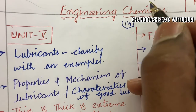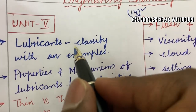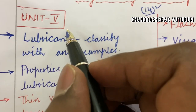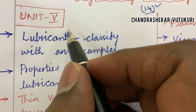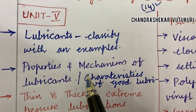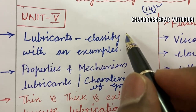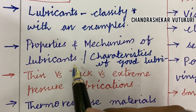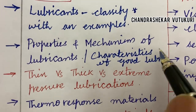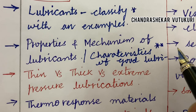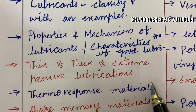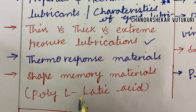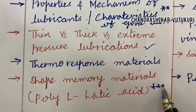In this video, I am going to highlight a few important questions for Engineering Chemistry for all branches of Engineering under JNTU-H. The first unit I have taken into consideration is Unit 5, because you are taking MIT 2. Lubricants and their classifications with examples is the topmost question. The properties and mechanism of lubricants and characteristics of good lubricants may also be highlighted questions. Thin versus thick versus extreme pressure lubrication differences, thermoresponse materials, and shape memory materials related to polylactic acid are also topmost questions.